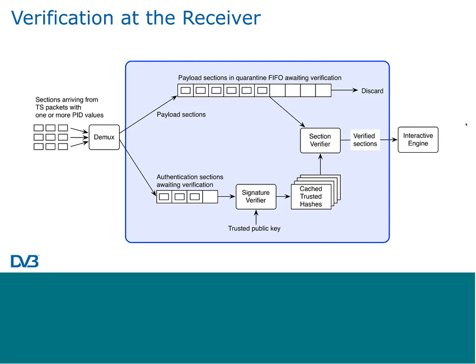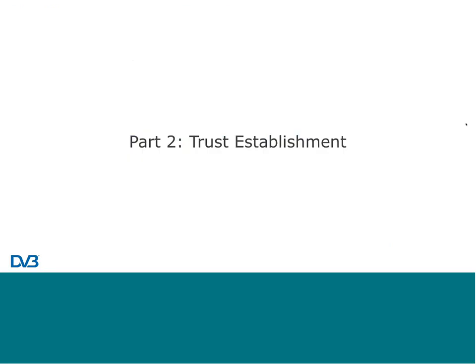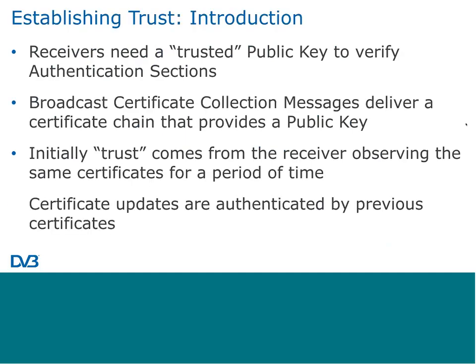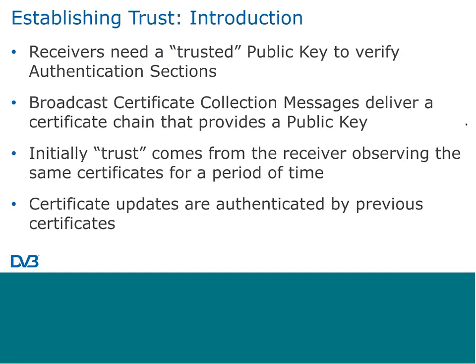That covers how we signed the data. The second part is how we get the public key to perform the verification. Receivers need a trusted public key to verify sections. We achieve this by broadcasting a certificate collection message, which is a certificate chain providing a public key.